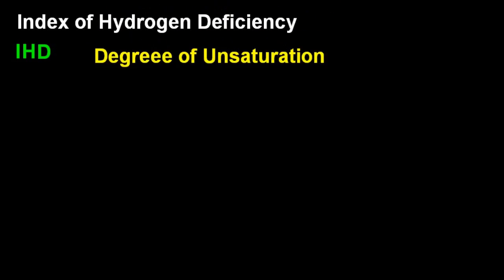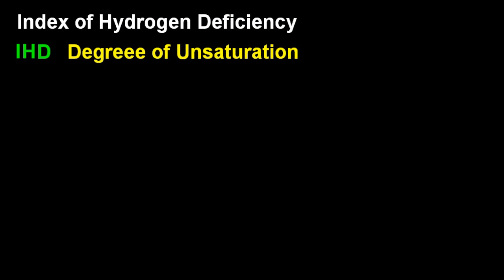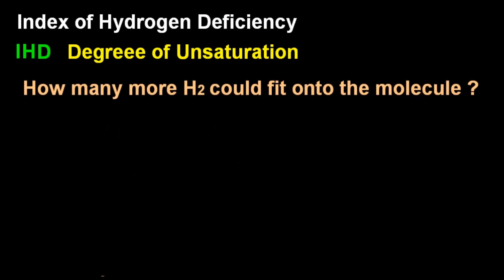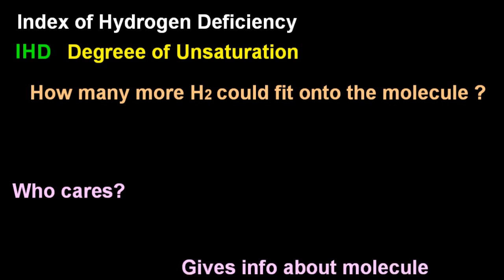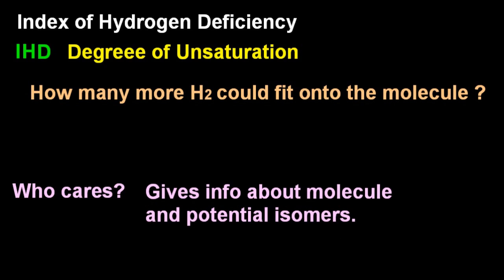The index of hydrogen deficiency also called the degree of unsaturation. That means how many more H2s could fit onto the molecule? Who cares? What a question. Well it gives information about the molecule and its potential isomers. Who cares? Don't worry about that.